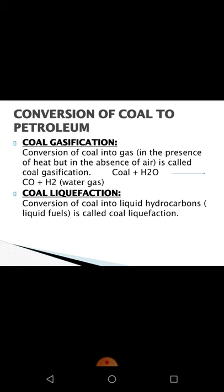As we discussed before, coal has destructive distillation, and as a by-product we get coal gas, also called down gas. The formula of coal gas is CO plus H₂, that is carbon monoxide plus hydrogen. In this process, when coal and water are mixed, the gases produced are water gas and coal gas.